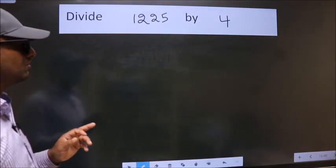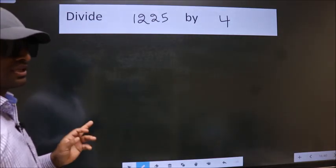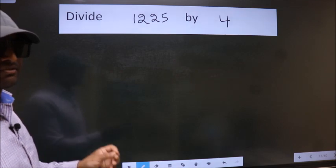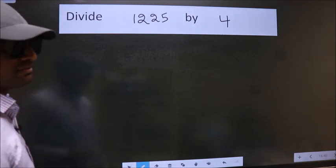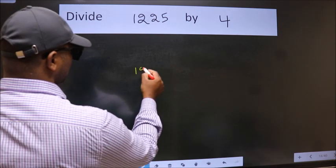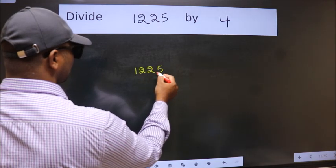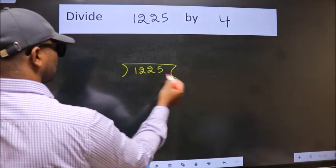Divide 1225 by 4. To do this division, we should frame it in this way. 1225 here, 4 here.